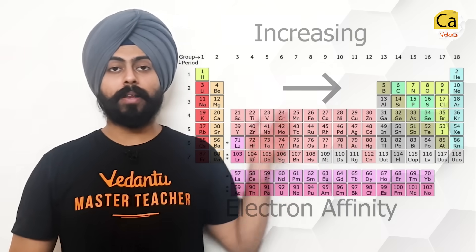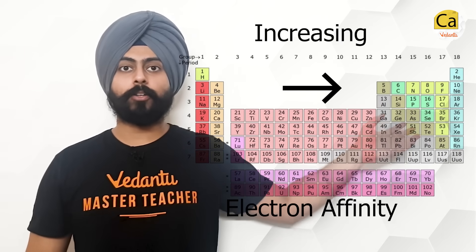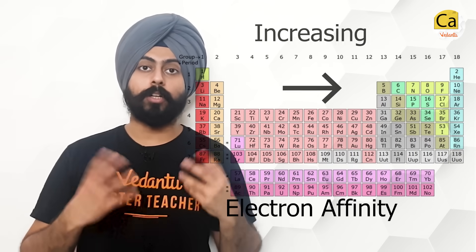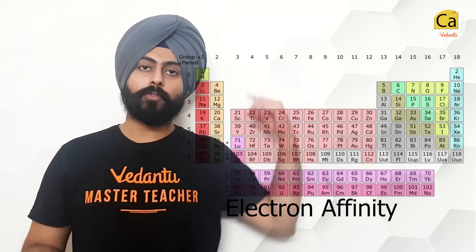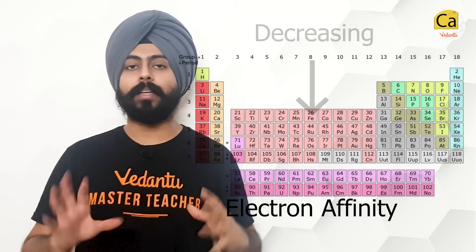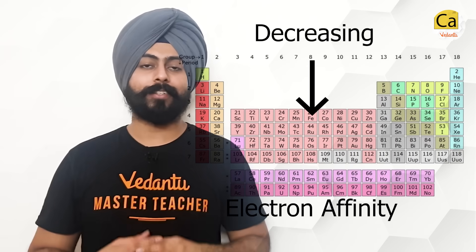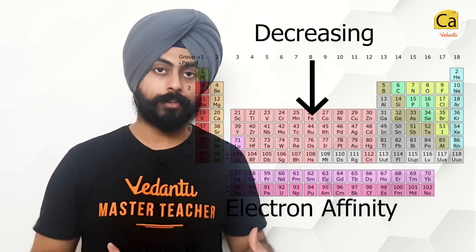Talking about the general trend of electron affinity: from left to right it keeps on increasing, and from top to bottom it keeps on decreasing.